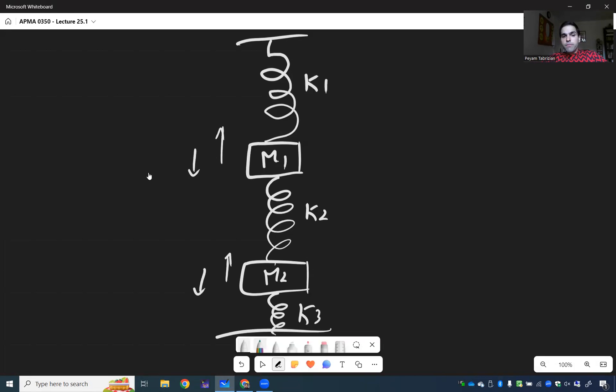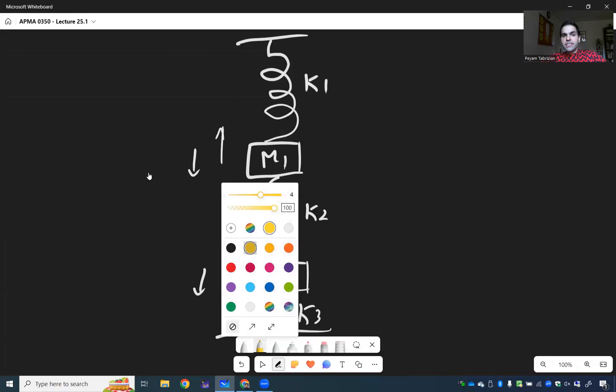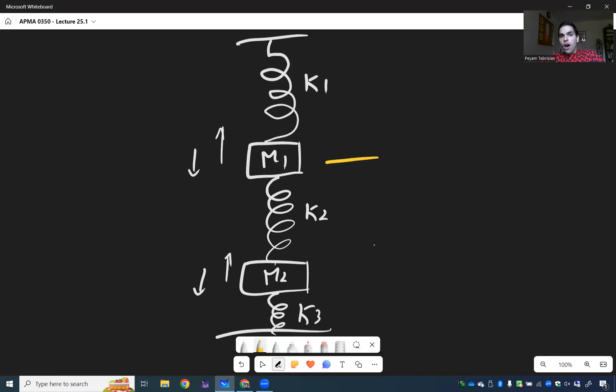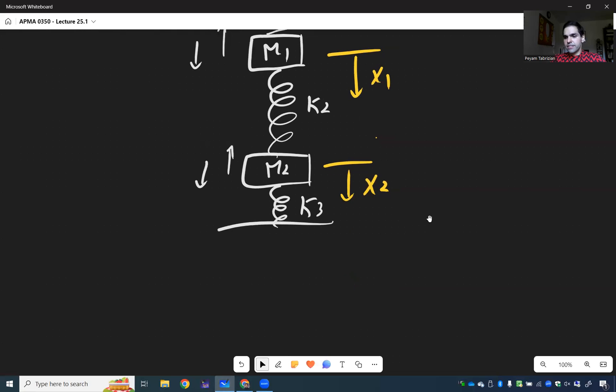And we want to figure out how do things move. Then what you can measure are precisely the displacements of M1 and M2. Again you don't need to know how to derive those equations, that's just an example, but it turns out you can model the behavior of the two masses with the following system.